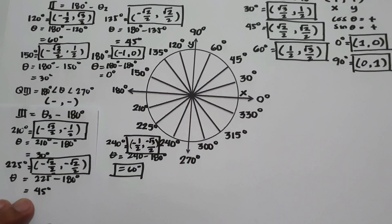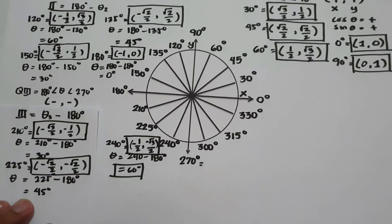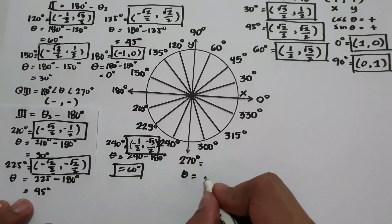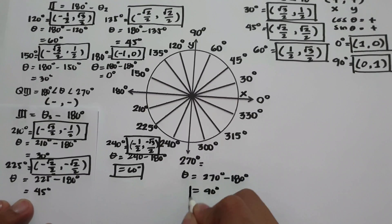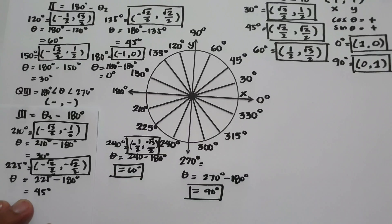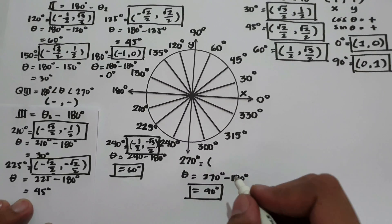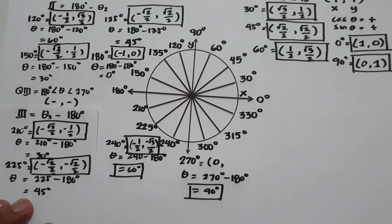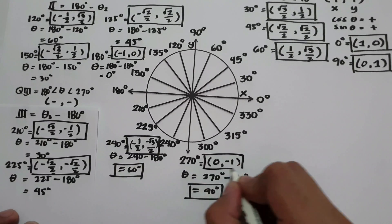What about 270 degrees? To find the coordinates of 270 degrees, let us determine the reference angle. The reference angle is 270 degrees minus 180 degrees, which is 90 degrees. Cosine 90 degrees in quadrant 3 is 0, and sine 90 degrees in quadrant 3 is negative 1. This will be the coordinates of 270 degrees.